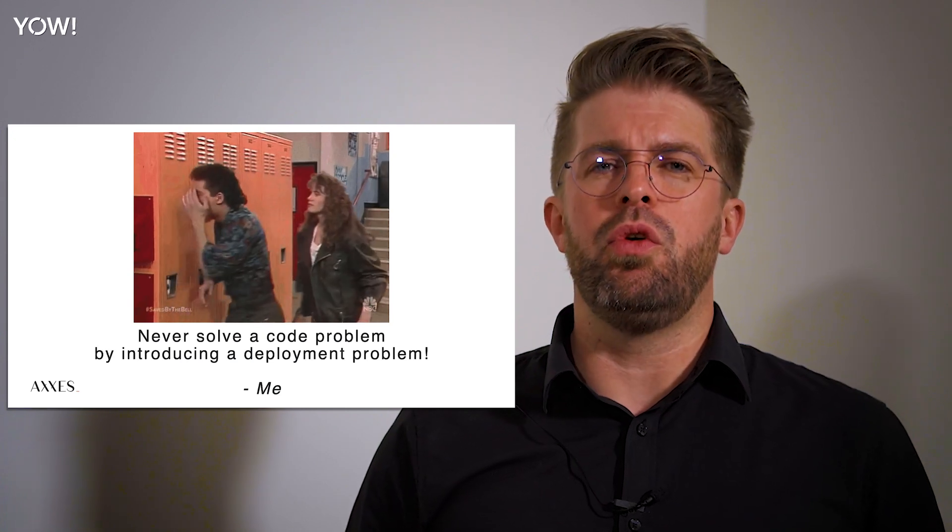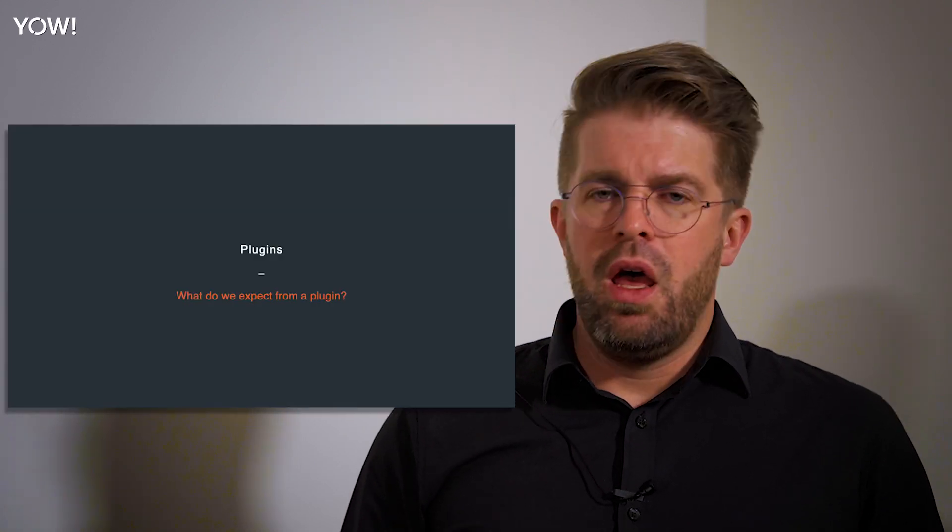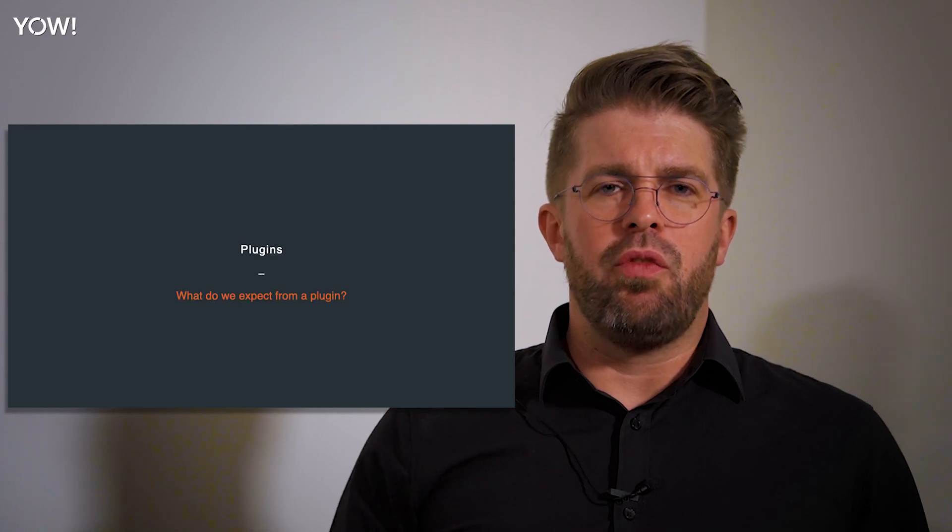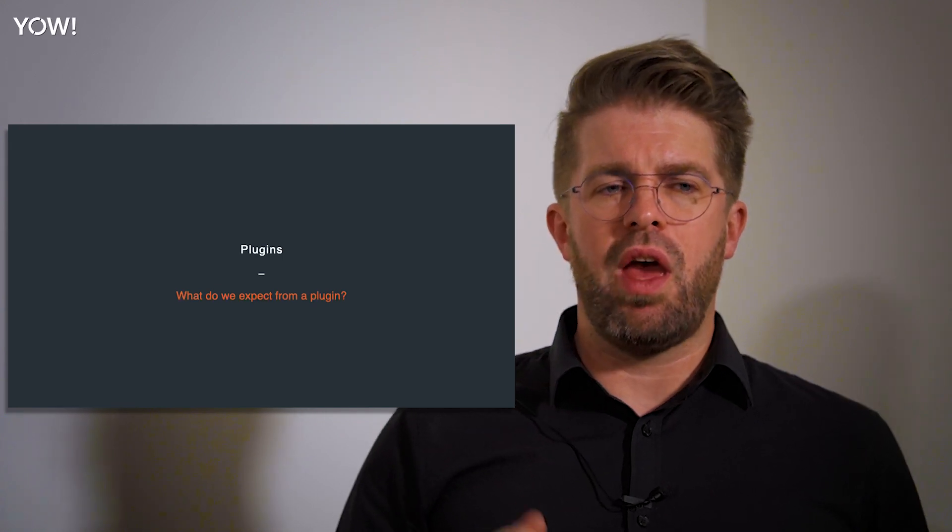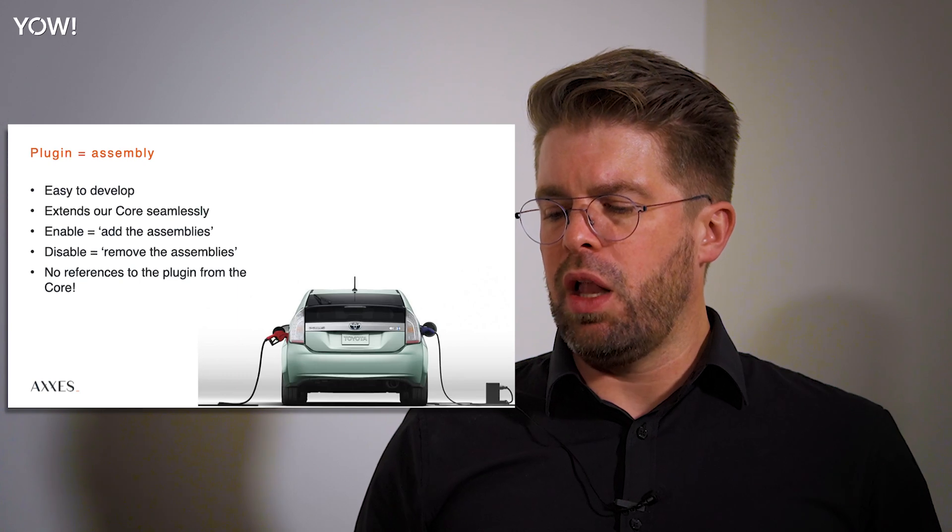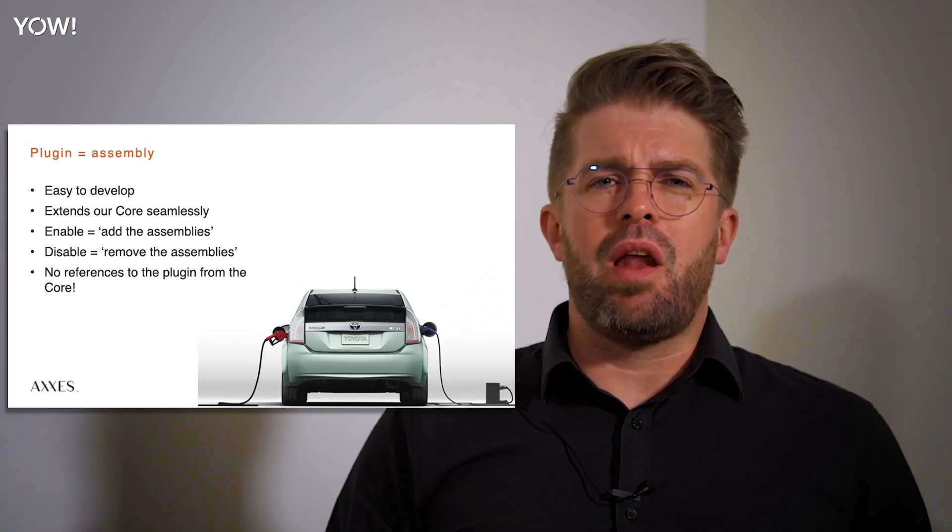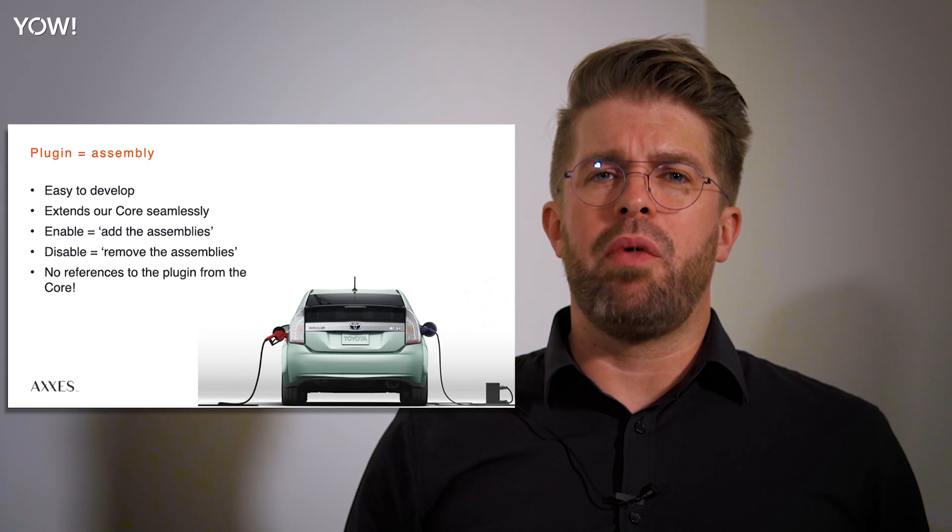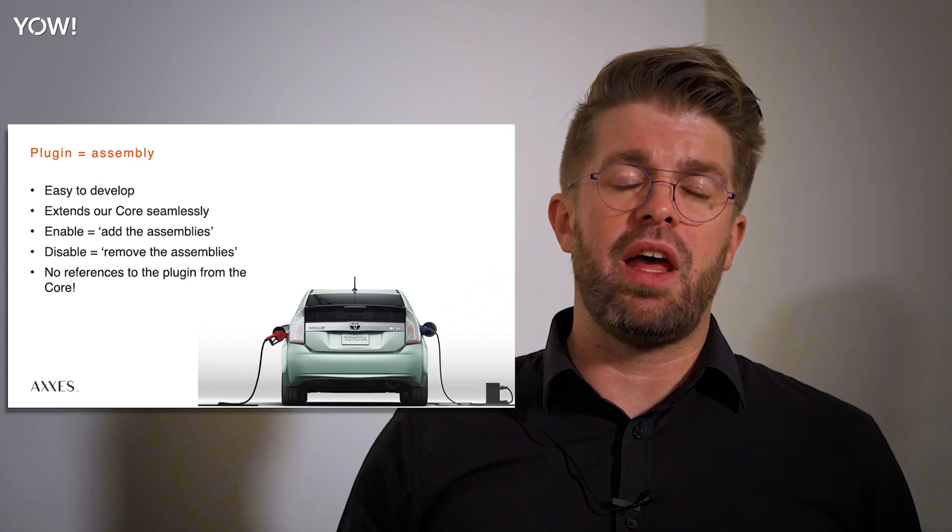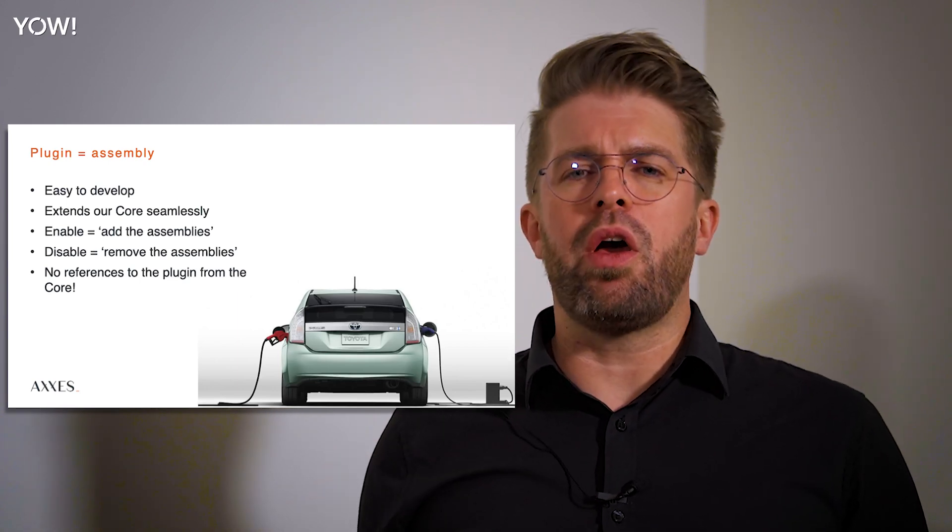If you want to build something modular—the story that I use when I give the full version of this talk is where we are building IoT devices and we want to be able to add functionality and remove functionality to an existing code base—you can use the plugin model. Then you can still run everything in a monolith. The idea is that a plugin should be an assembly that is easy to develop and easy to test and that doesn't have any tight coupling from the core.